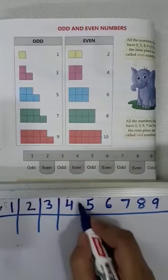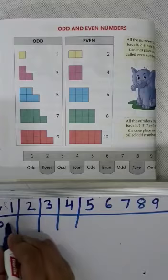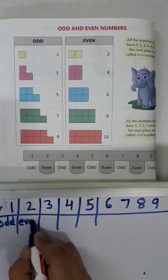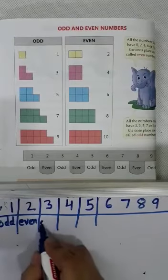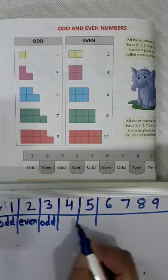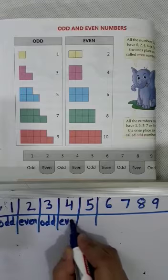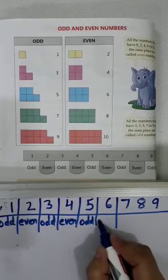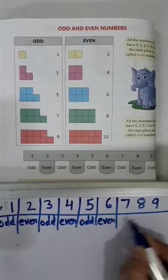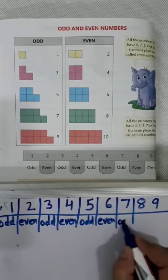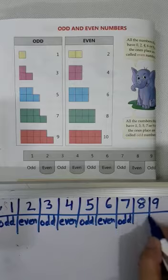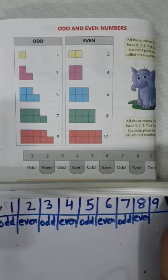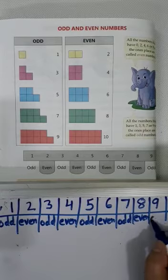1 is odd number. 2 is even number. And 3, odd number. 4, even number. 5, odd number. 6, even number. 7, odd. 8, even. And last number, 9 is odd number.